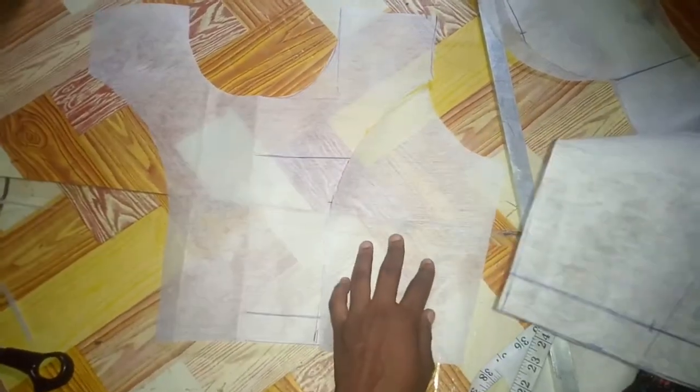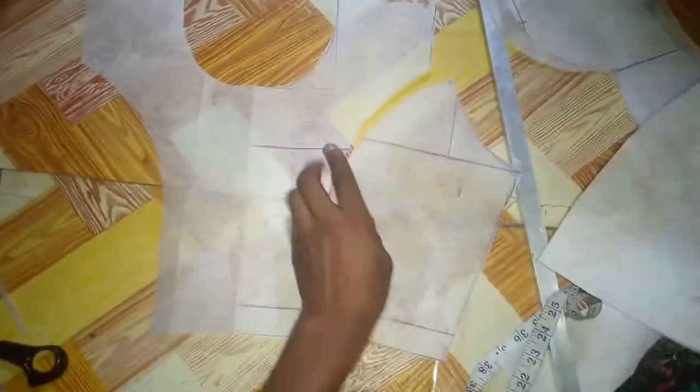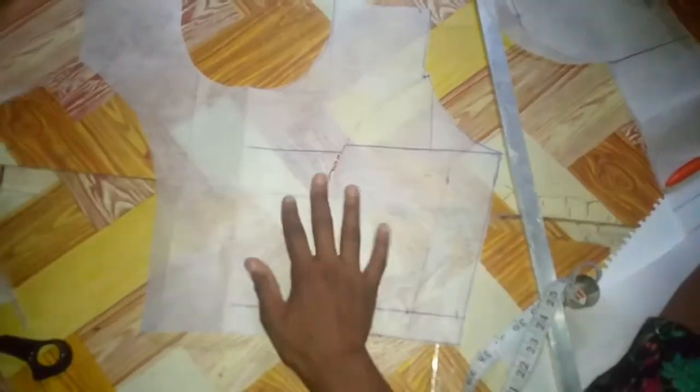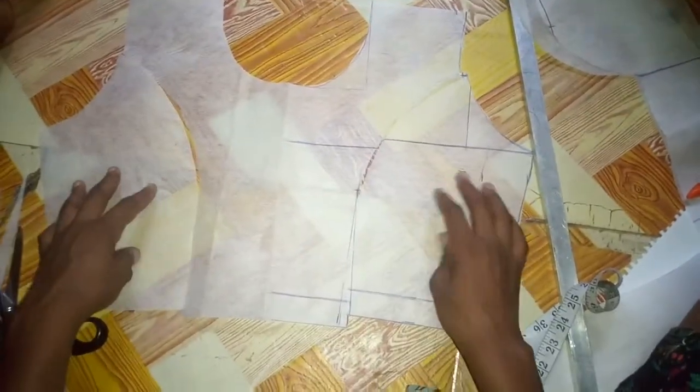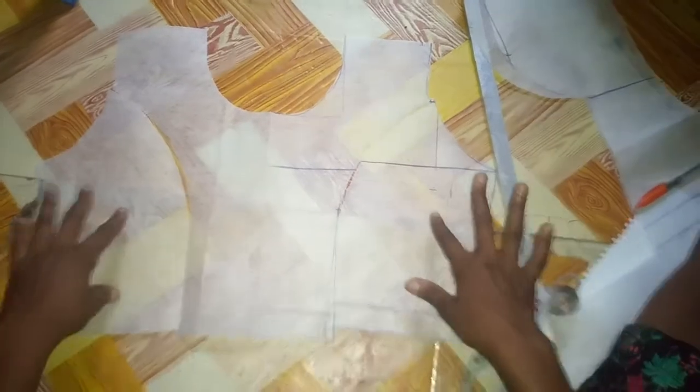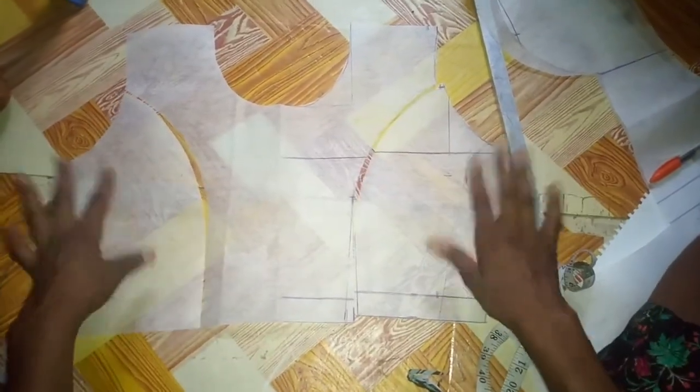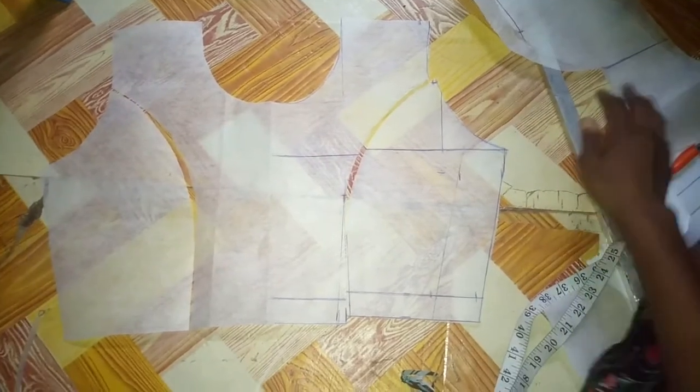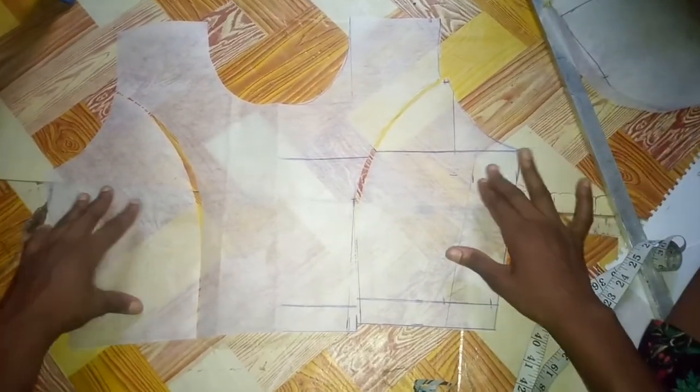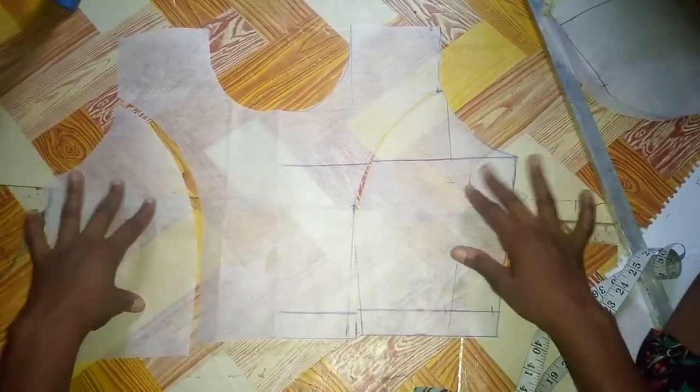Then this is one side and this is just the other side. So I told you that it's as simple as anything, as simple as ABC. Within one minute I already have my princess dart.